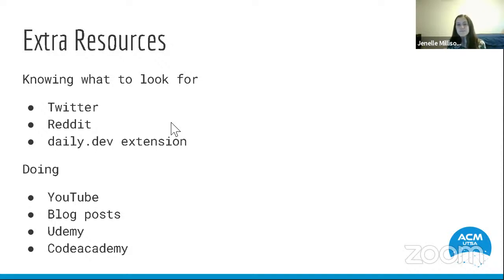If you know what you want to do, some resources for actually completing that project would be YouTube — there are tons of video tutorials for almost anything, or you can patch together a few tutorials to do something of your own. Blog posts are another great resource; the Python community in general has a lot of great blog posts about different projects using Python. Finally, Udemy and Code Academy are two online course-formatted services. Udemy has courses in everything from graphic design to machine learning and deep learning. Code Academy is great if you just want to get started — you can take a quiz to see your skill level, go by programming language, and they'll show you neat things you can do with each language.